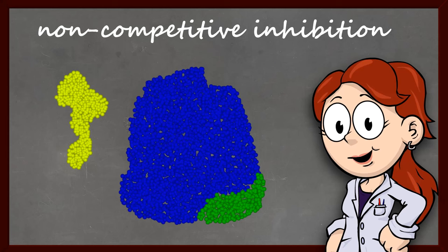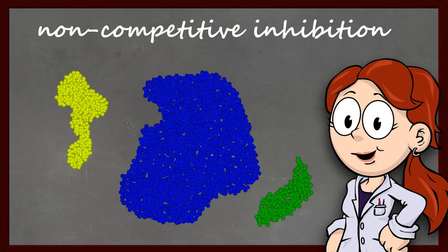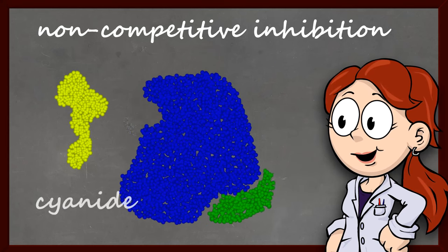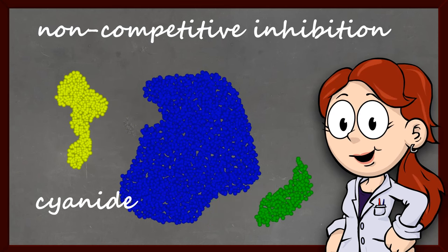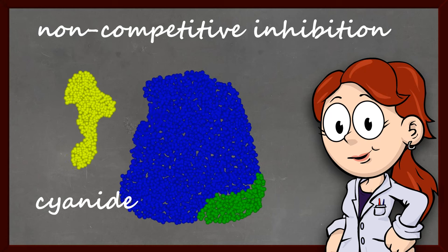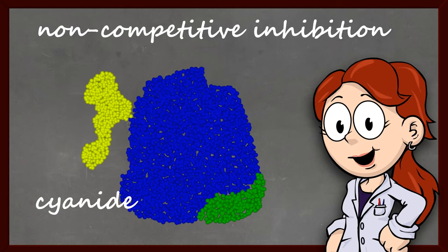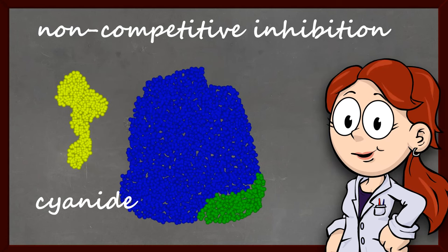An example of a non-competitive inhibitor is the highly toxic poison cyanide. Cyanide is so lethal because it blocks the function of an important enzyme needed for cellular respiration. Without cellular respiration, our cells die because they cannot produce the ATP needed to carry out their normal functions.